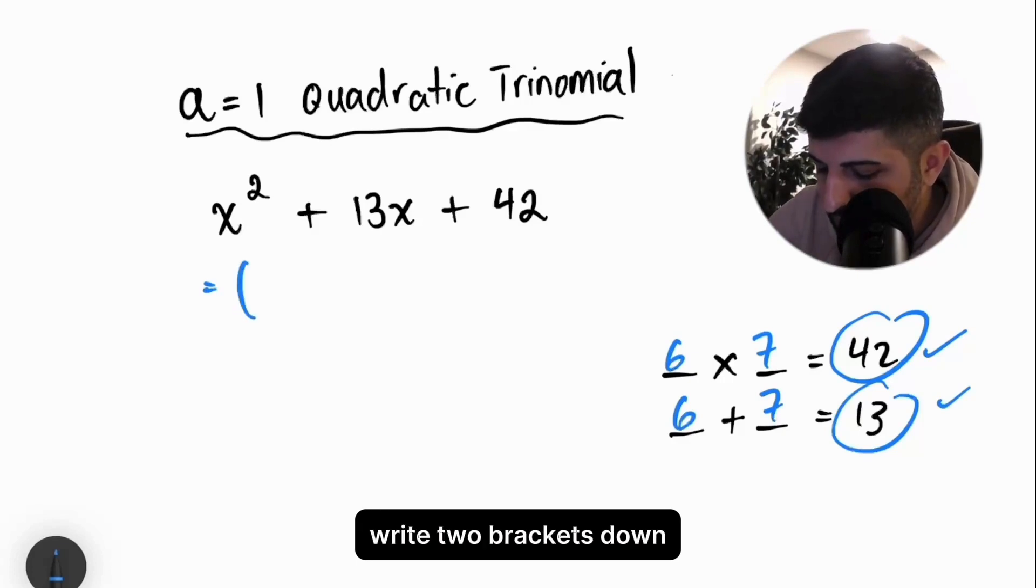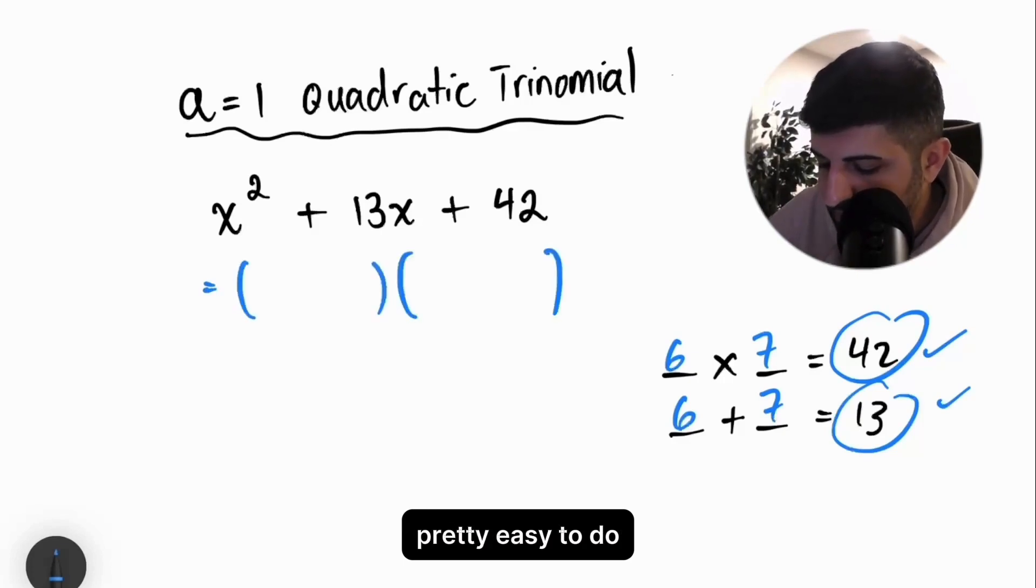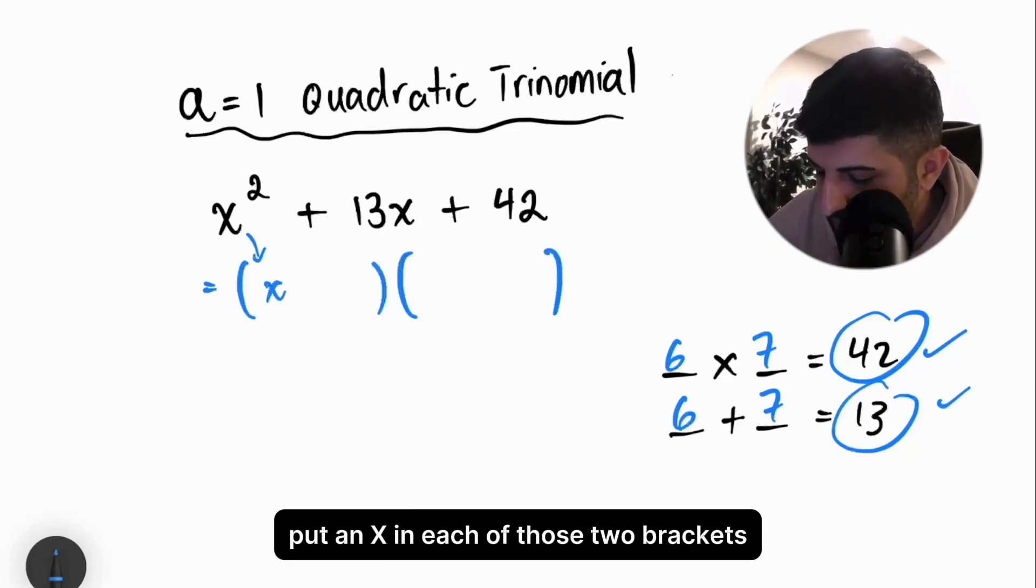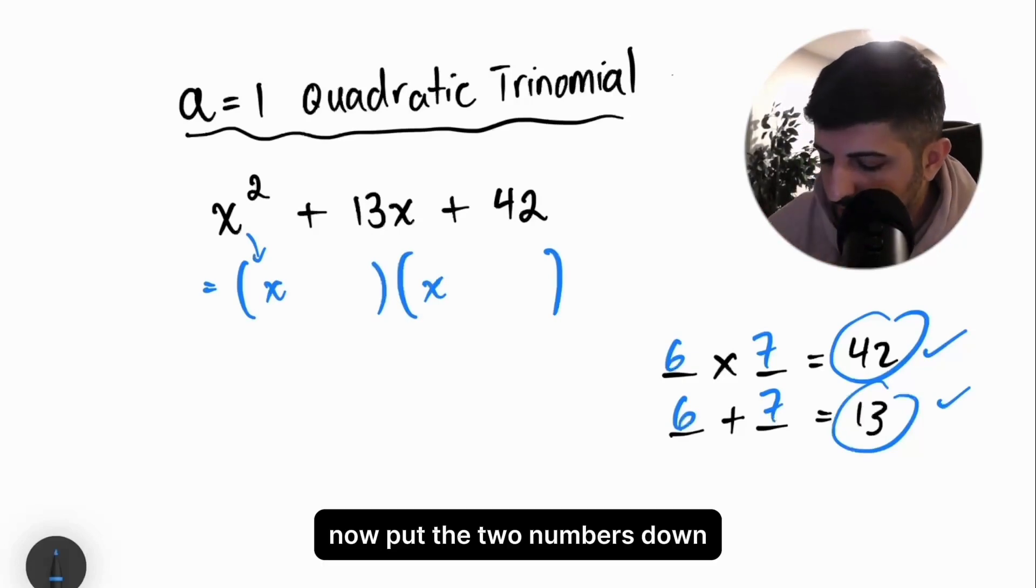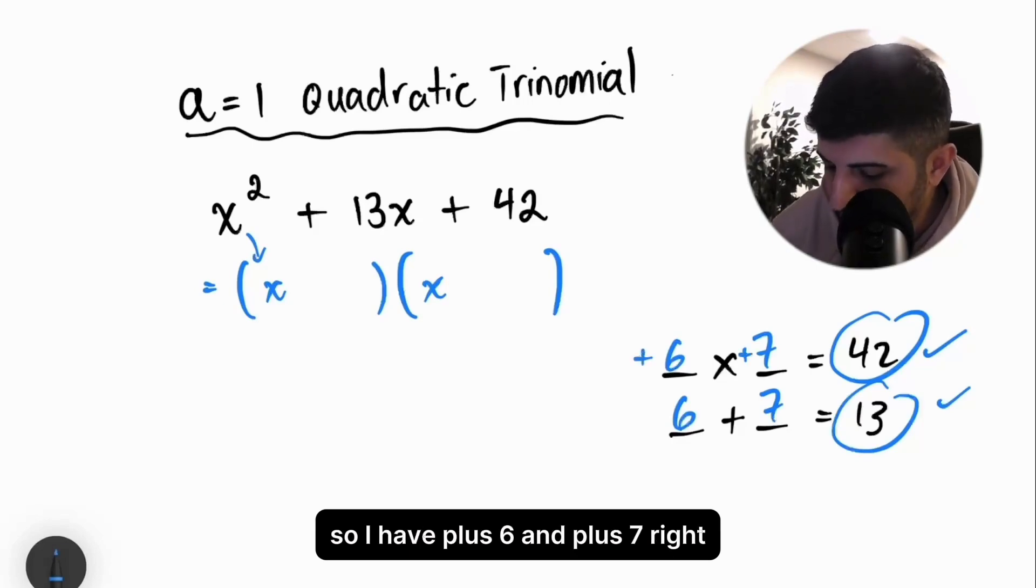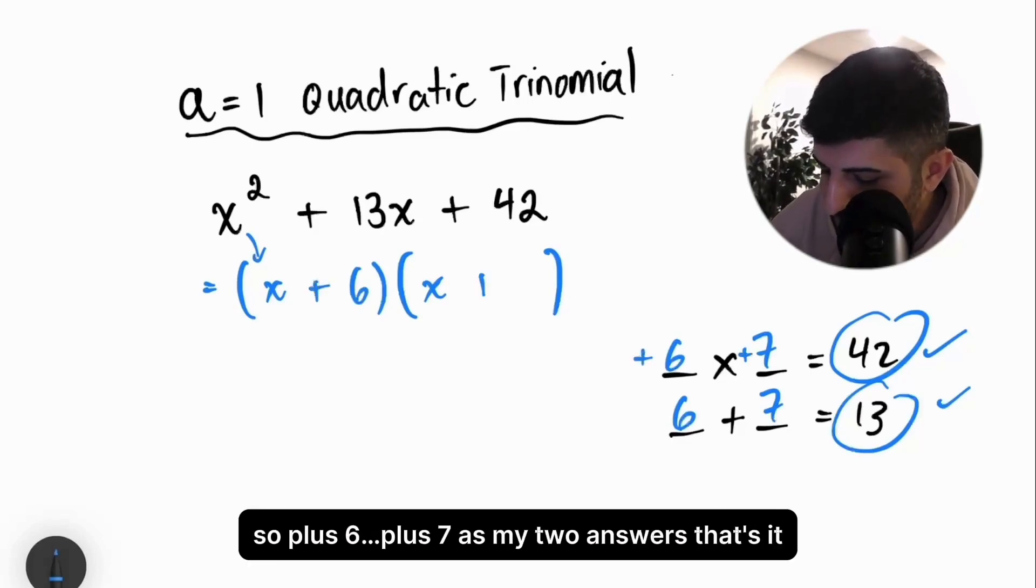And I can factor it. Write two brackets down. Put an x in each of those two brackets. When you multiply those, you'll get x squared back. That's beautiful. Now, put the two numbers down. I have plus 6 and plus 7, plus 6 plus 7 as my two answers. That's it.